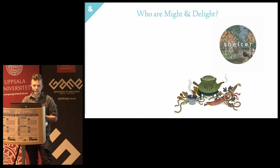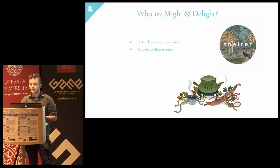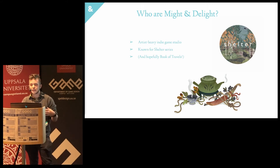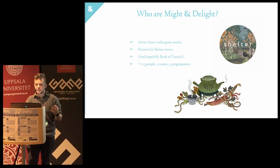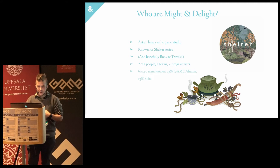Introducing Might and Delight, for those not aware of us. We're an artist indie game studio who does weird emotional projects for the most part. We're known for the Shelter series — mainly a series of motherhood adventure games. Hopefully now we're also known for Book of Travels, since we've been pushing that a lot. We're 23 people right now, which is the most we've ever been — we've been down to six people at times. We split into two teams. We're four programmers, so the main workforce is artists. We're 60-40 men-women, 13% game alumni, and 13% Sofia, which is a common name for some reason.